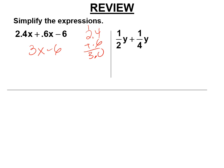1 half y plus 1 fourth y. Well, we have to have common denominators, right? So we need 2 fourths there plus 1 fourth y equals 3 fourths y.